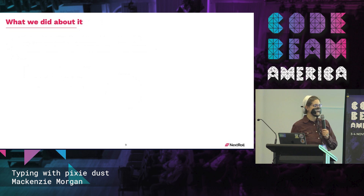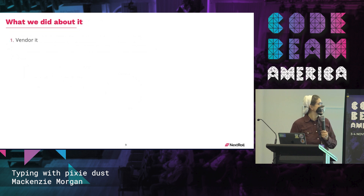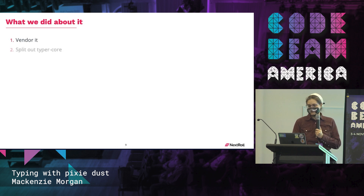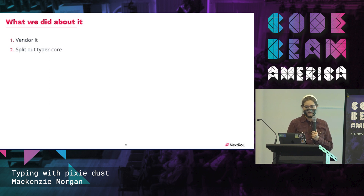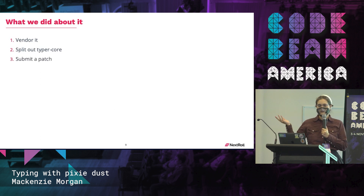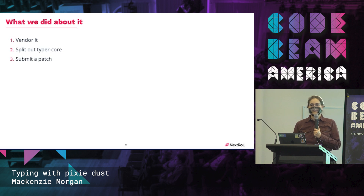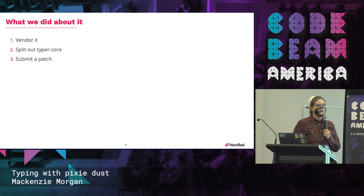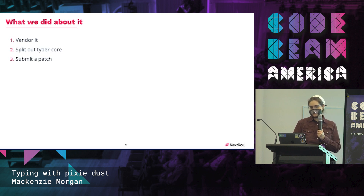Here's what we decided to do: we vendored Typer into our plugin. Then we split out what we decided to call Typer core to expose an API. We submitted that as a patch back to OTP so that, as of OTP 25, Typer actually has an API. Because we don't want to hold on to a vendored version long-term and have to maintain that — nobody wants to do that.